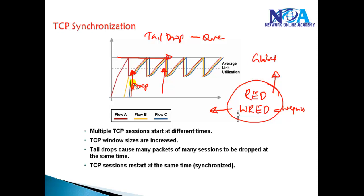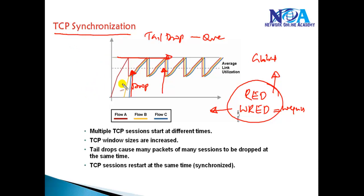These mechanisms recognize congestion before the queue is full and start signaling individual TCP flows to slow down their sending rate. This ensures TCP messages are sent at a controlled slow rate without getting dropped and without creating multiple TCP sessions repeatedly.